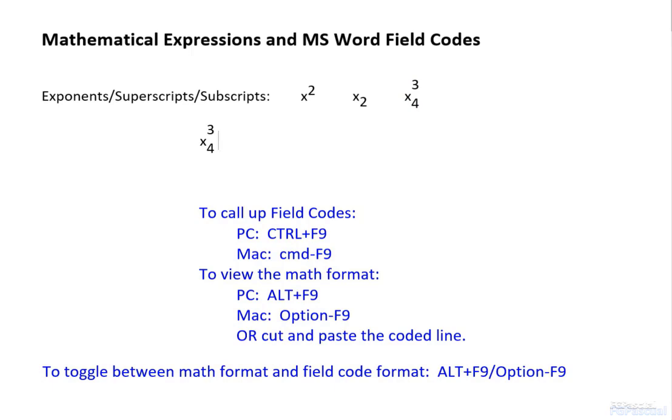Let us go back to the fraction a squared over b squared. Start with the field code brackets, eq space backslash f for fraction. Open parenthesis.